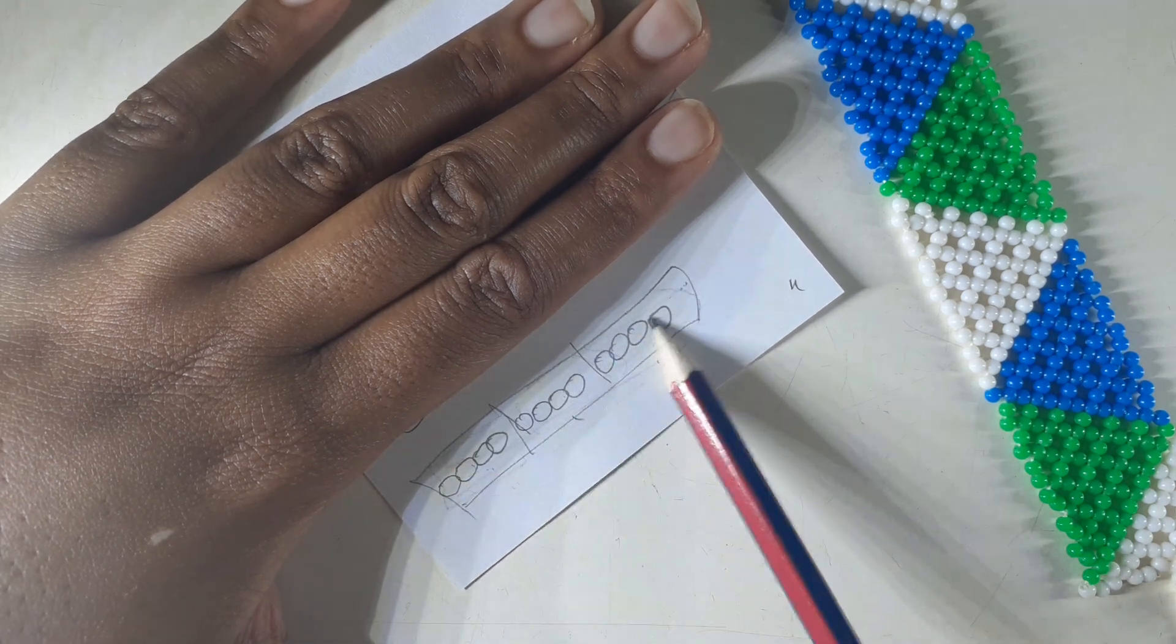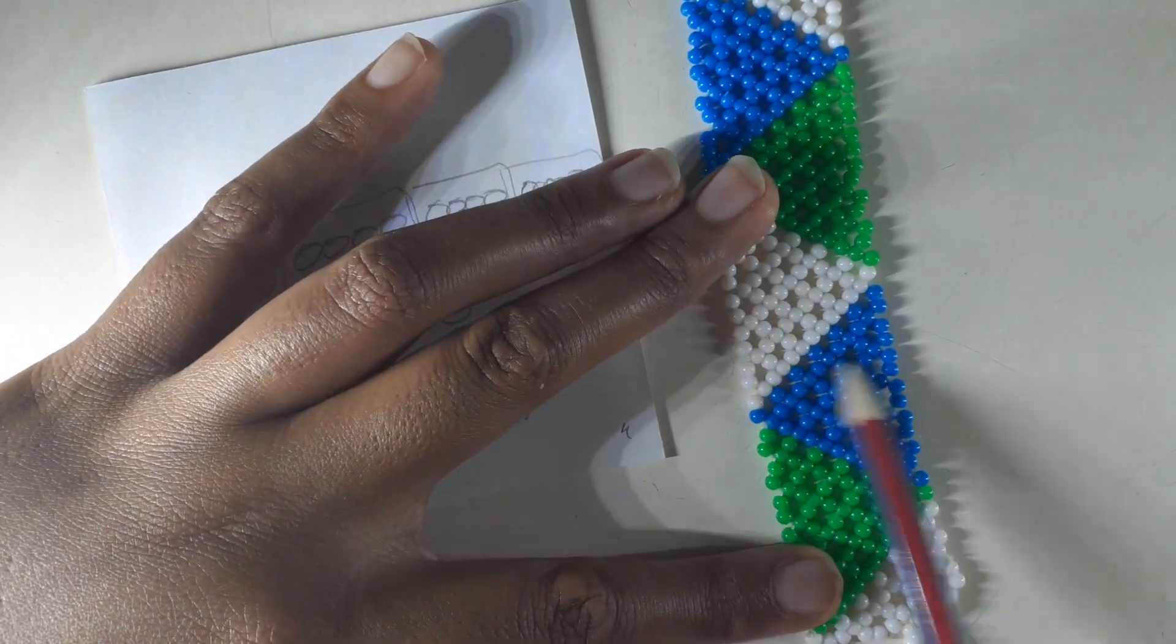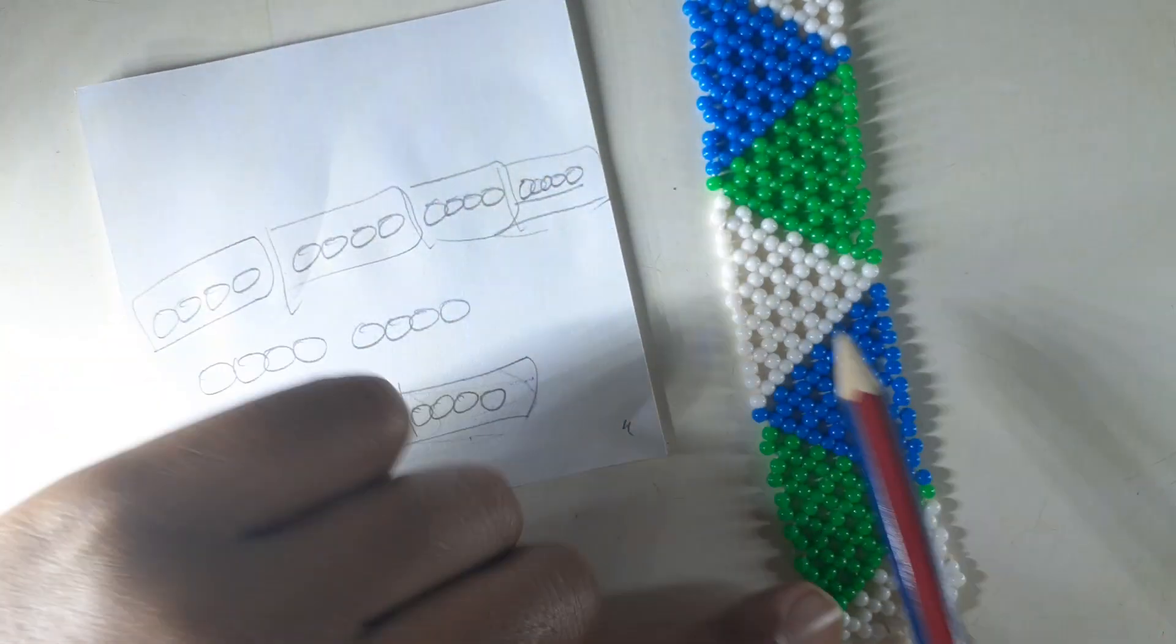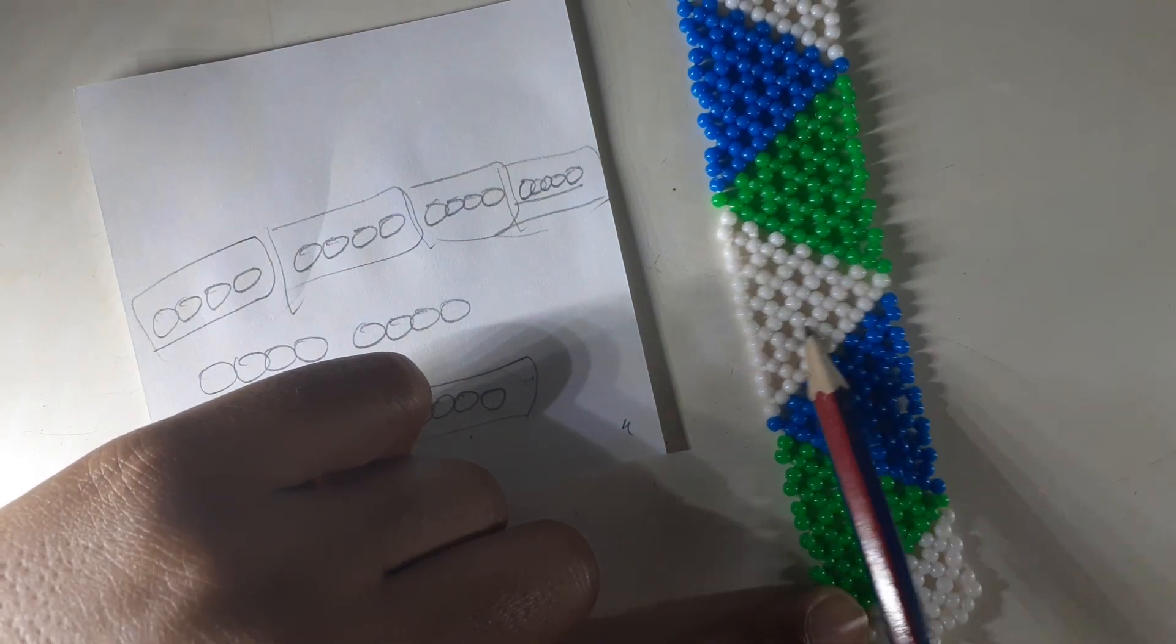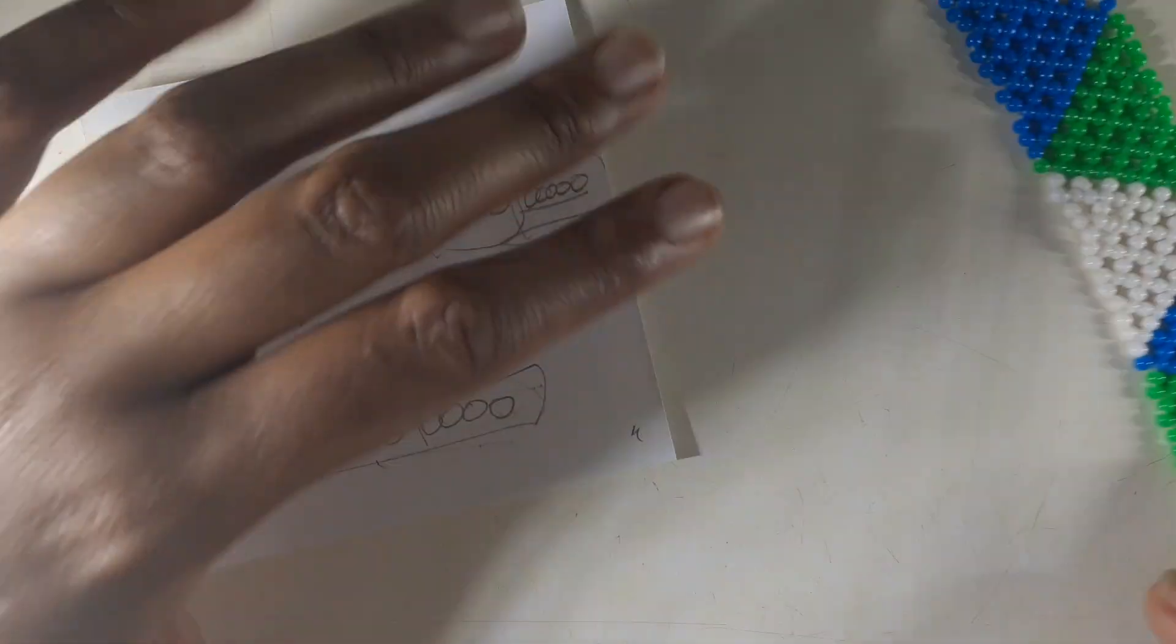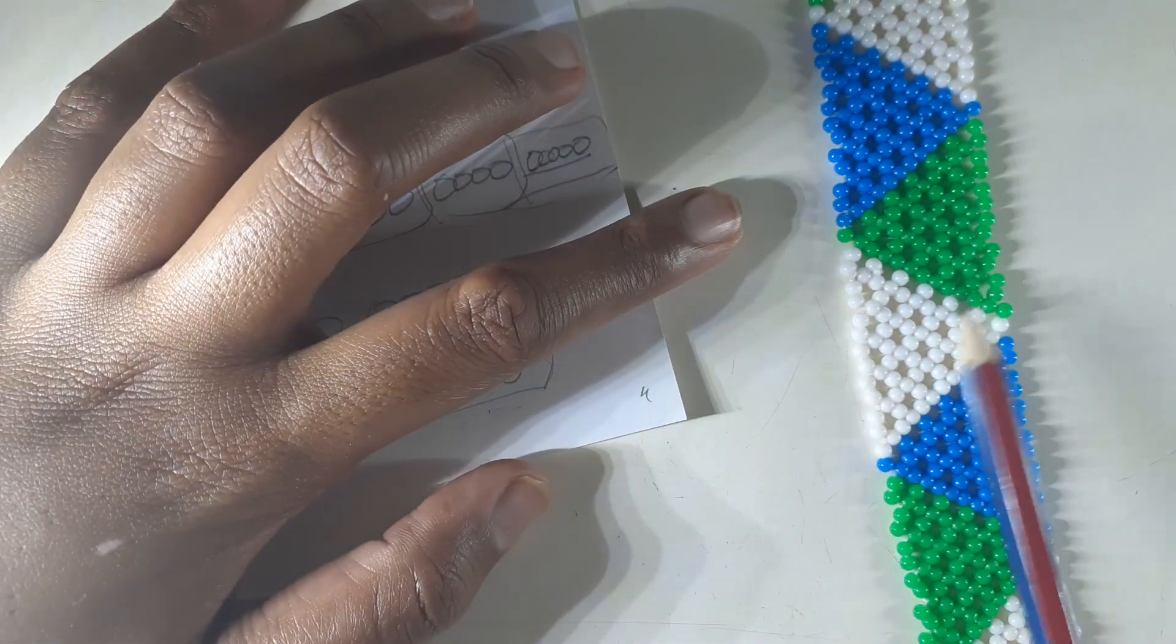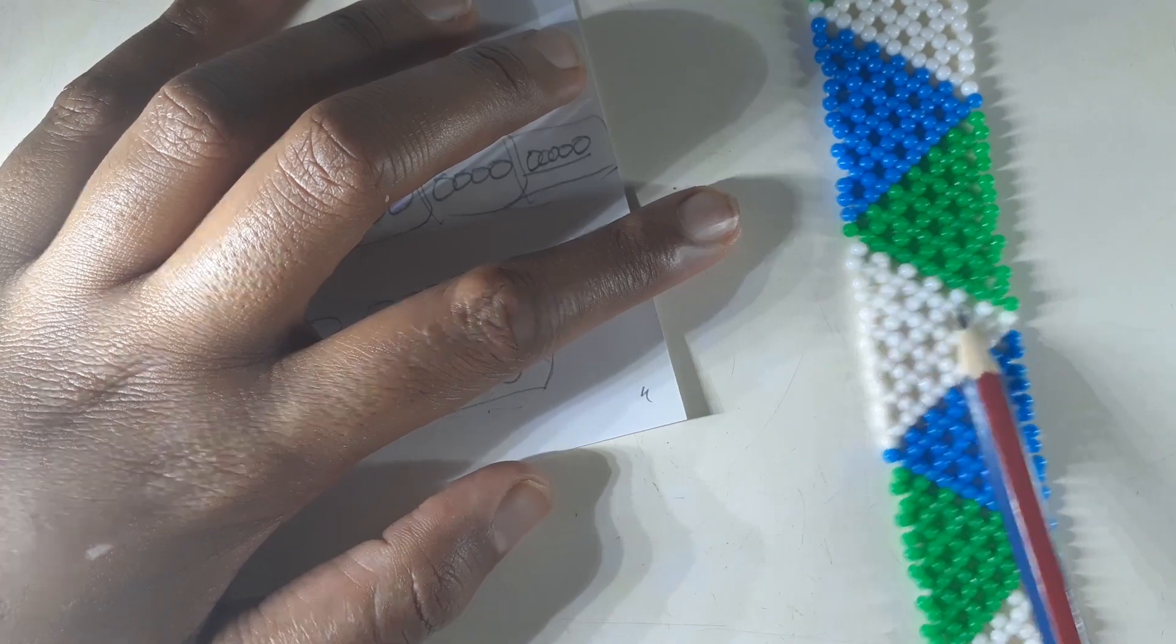So these groups of four determine the thickness of the belt. From this side to this side, that's the thickness of the belt or the bracelet. If you want the thickness to be a smaller size than this, you can just remove one group of four.